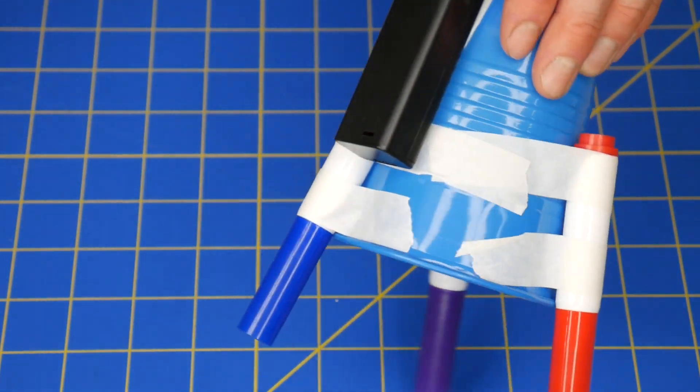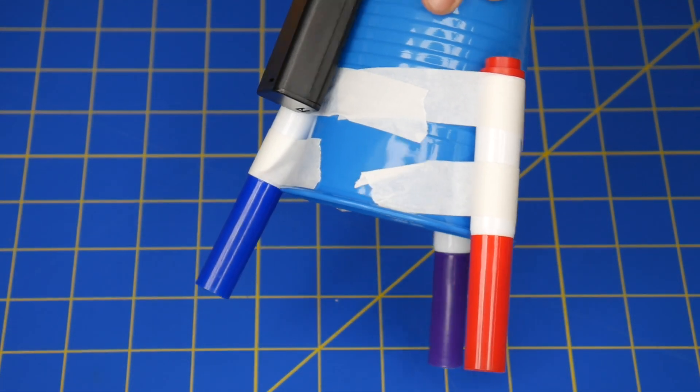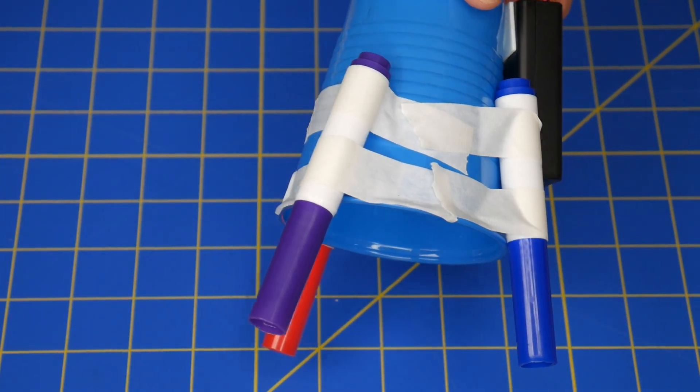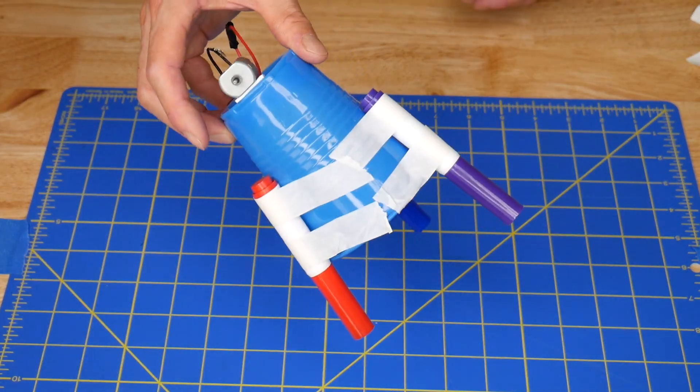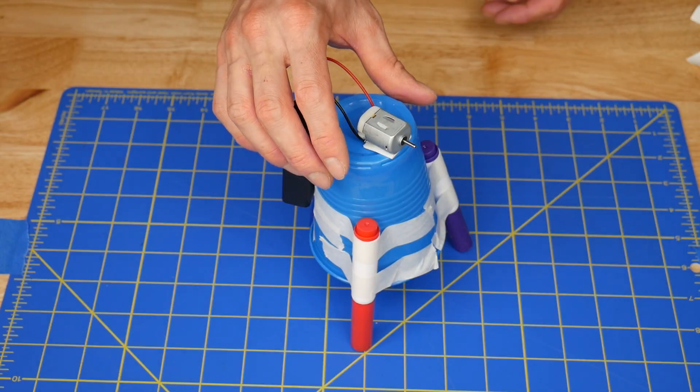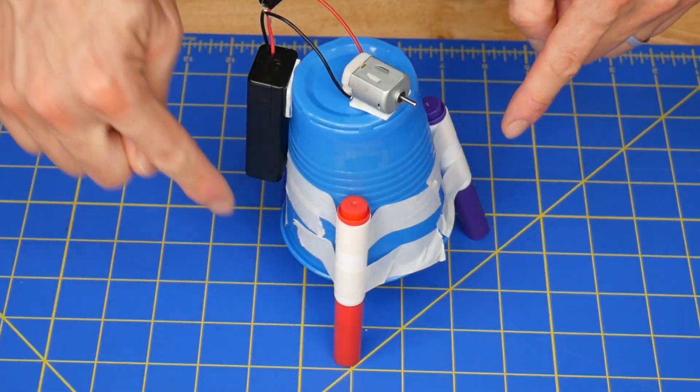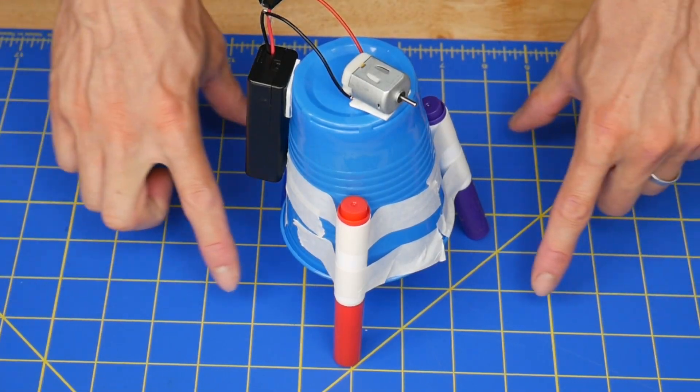Next attach three washable felt tip markers to the bottom of the cup with at least two pieces of tape per marker. You can add more markers but three is nice because it forms a tripod which ensures that the tips of all three markers are going to be making contact with your paper.